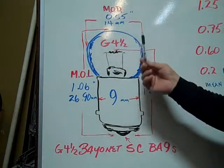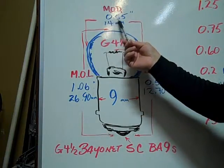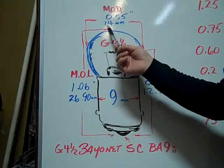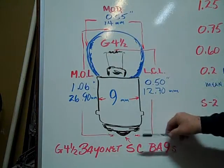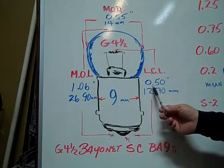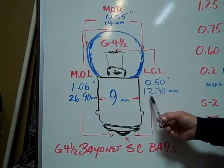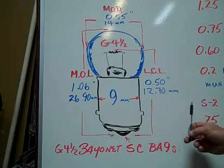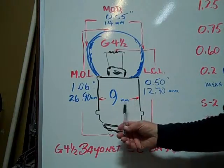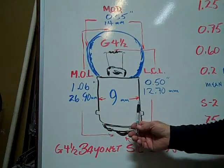The maximum outer diameter is 0.55 inches or 14 millimeters. The light center length is 0.50 inches or 12.70 millimeters. The base has a diameter of 9 millimeters.